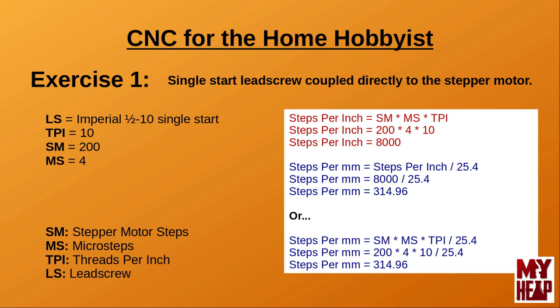If, however, most of our tooling was in metric, we would need to calculate the steps per millimeter. This can be calculated in two ways. Since we know the steps per inch of travel, we can divide this number by 25.4 to give us the steps per millimeter. 8,000 divided by 25.4 equals 314.96 steps per millimeter. A formula to figure out the steps per millimeter would be the number of steps to rotate the motor one revolution, times the TPI of the screw, divided by 25.4. So: 200 steps per revolution times 4 microsteps times 10 TPI divided by 25.4 equals 314.96 steps per millimeter — the same answer.